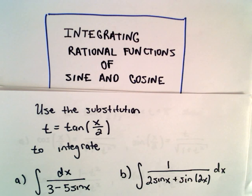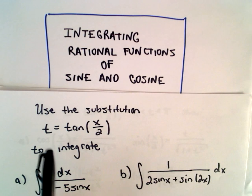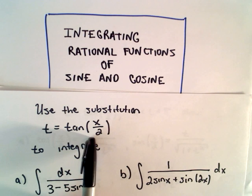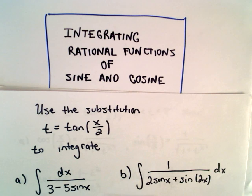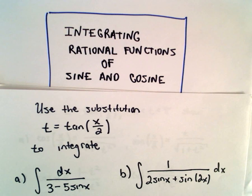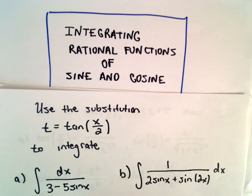In this video I want to talk about integrating rational functions of sine and cosine. To do these, we're going to make a substitution: t equals tangent of x over 2, and then we're going to use that to integrate. I've got two examples here. Neither one of these actually involve cosine, but the idea is exactly the same. So if you can do these two examples, you can do the examples involving cosine as well.